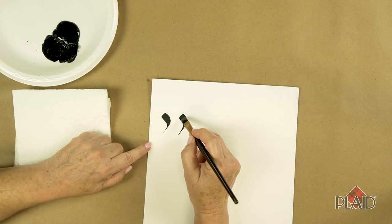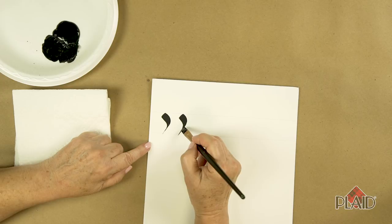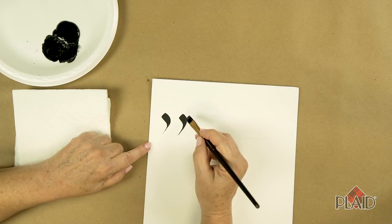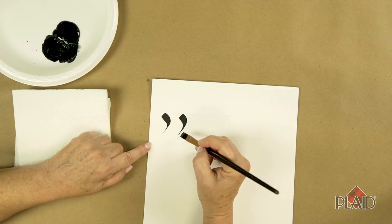I begin to apply pressure and as I move towards me, I'm going to start releasing pressure and end back up on the chisel edge. That's what makes the fat part and the thin part of this stroke.